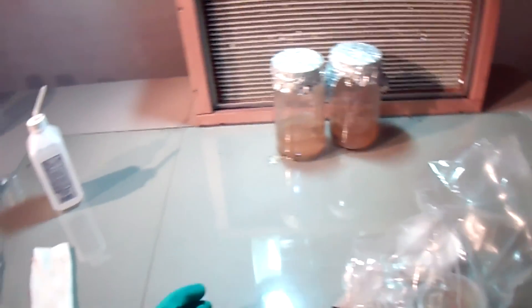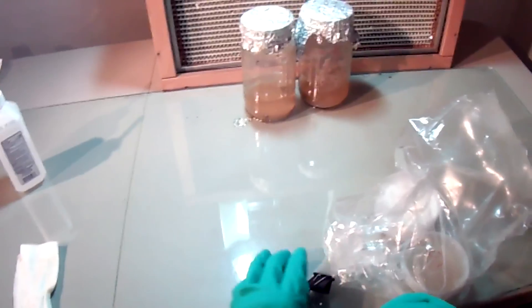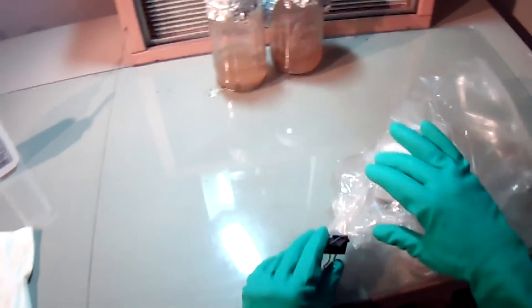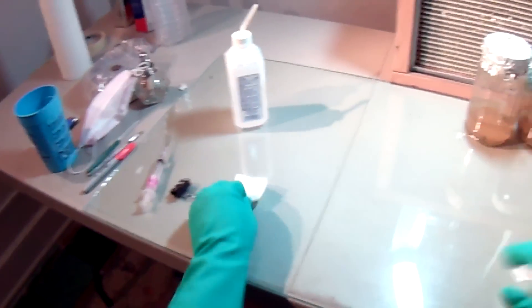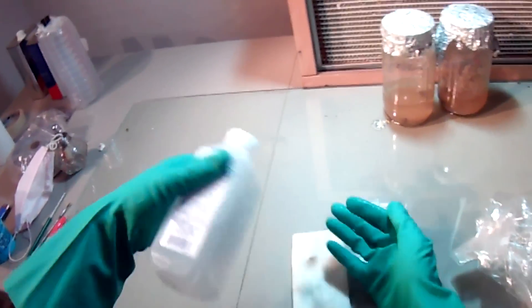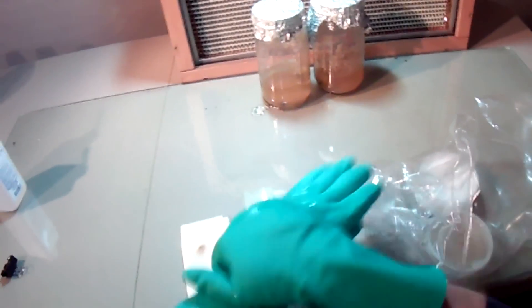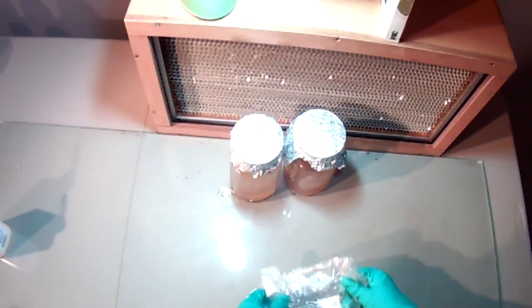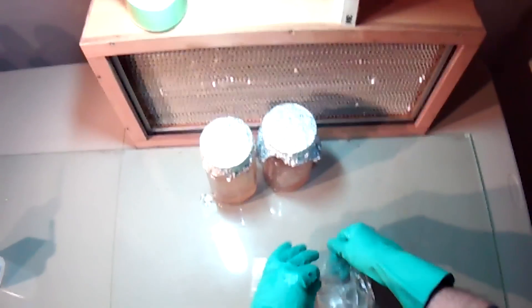So, what we're going to do right now is inoculate these jars, or at least one of these jars, with some already grown out on an agar dish of king oyster mycelium. Again, we're going to get our hands nice and liberally wiped with alcohol.